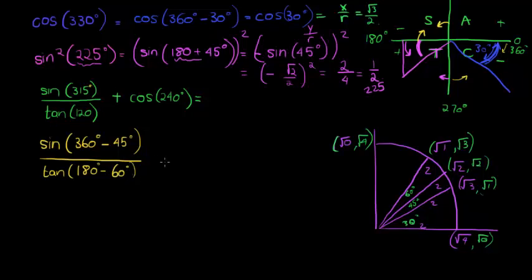And finally, plus cos of 240. And finally, 240 is in the third quadrant. So we have plus cos. Third quadrant is 180 degrees plus 60 as well. Okay.